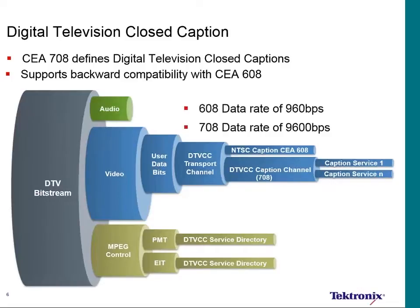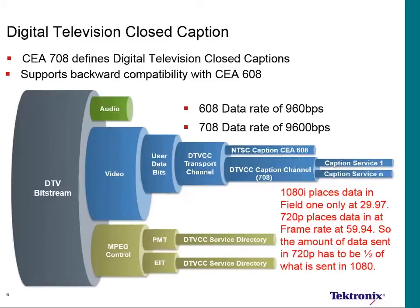The 608 data is supposed to run at 960 bits per second, and the 708 data rate is supposed to be 9600 bits per second. These values become very important when considering how captions are inserted — it's different for 1080 content than for 720 content. In 1080i content, we insert captions in field one at frame rate, so all captions are inserted into the video at the frame rate of the video.